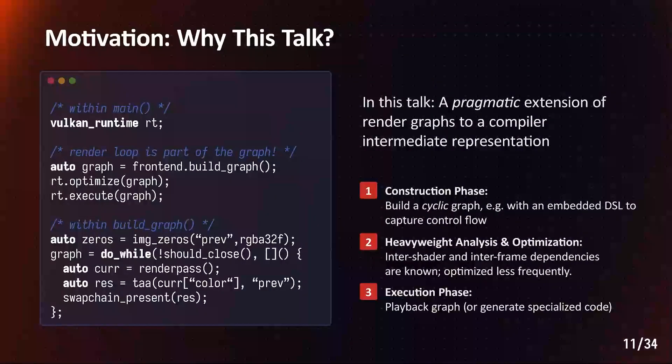And this will be the focus of our talk. We present a pragmatic extension of render graphs to a compiler intermediate representation that allows cyclic dependencies and instruction level planning. In this system, we execute the same three steps. We again go through construction, analysis and optimization, and execution. However, the render loop and any other control flow is moved into the graph. Analysis and optimizations therefore are only executed once ahead of time.